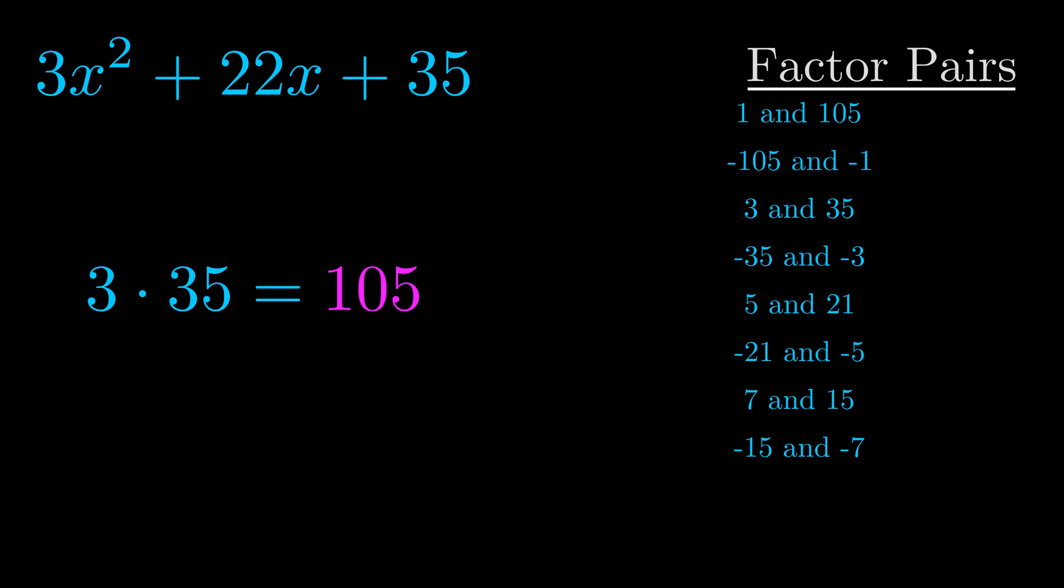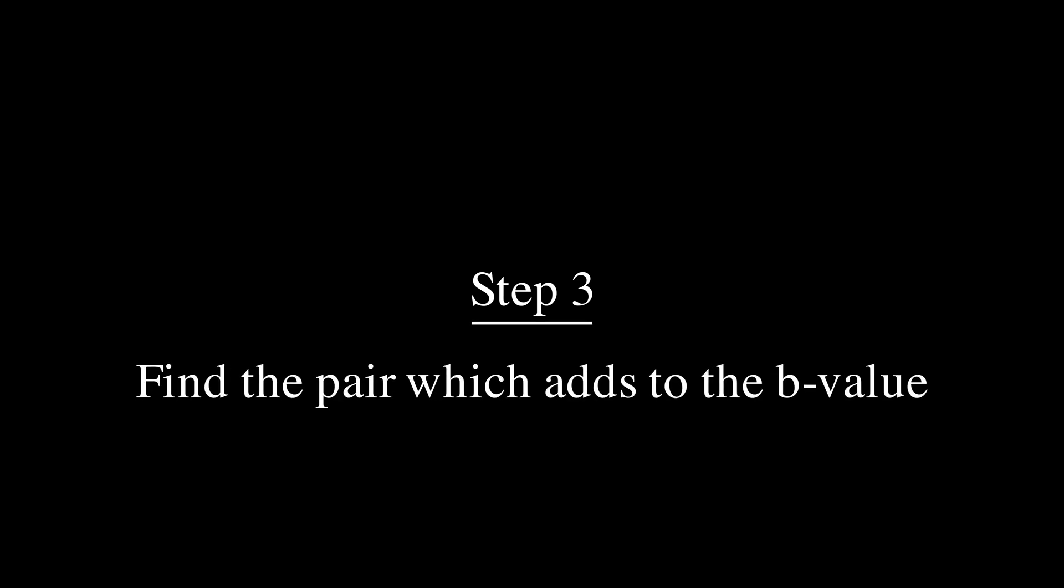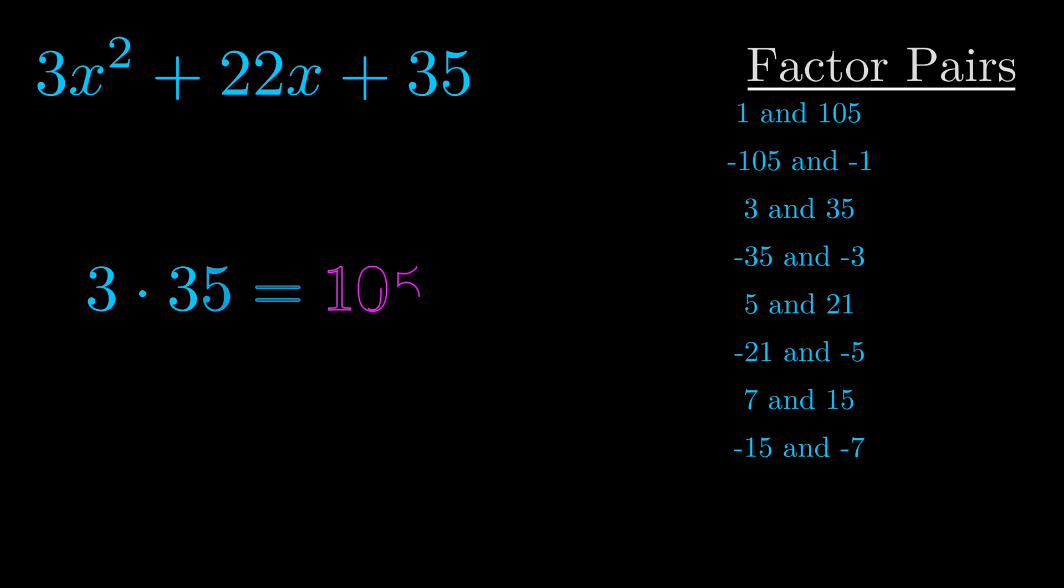Now once you have these factor pairs the goal is to find which of these pairs adds to the b value. The b value is the coefficient on the x term. That's the middle term, the one that we haven't done anything with yet. And really this is the only factor pair that we need.